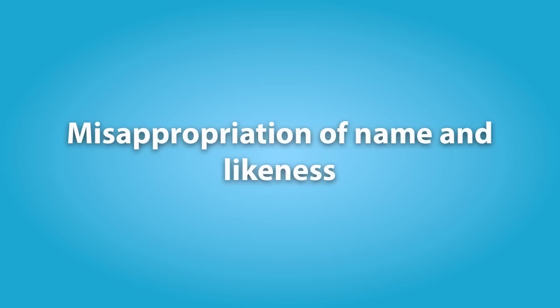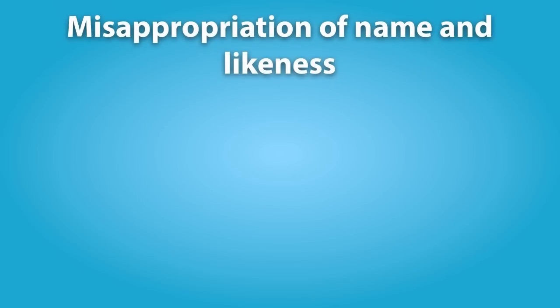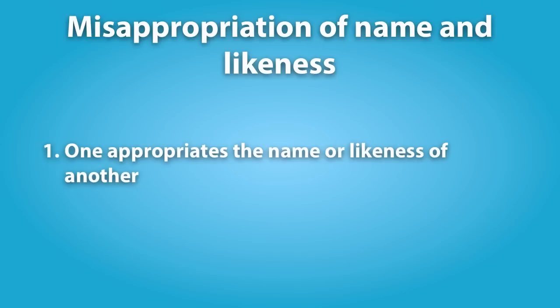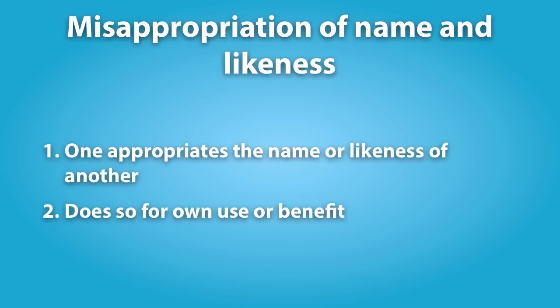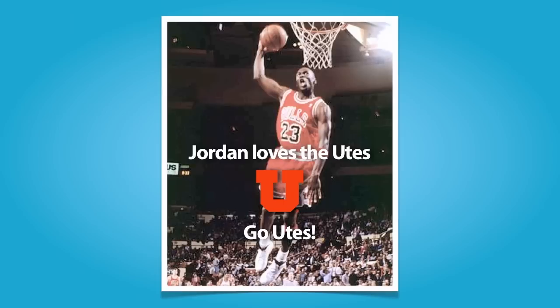The third common law tort recognized in Utah and most states is the tort of misappropriation of name or likeness. This tort is based on the concept that every person has a so-called right of publicity — the right to control the use of one's name, image, or distinguishing characteristics, such as a voice. Utah has enacted a statute that also makes this tort a crime. There are two elements: liability attaches when one appropriates the name, likeness, or characteristic of another and does so for one's own use or benefit, usually commercially. An example would be using Michael Jordan's name or image implying an endorsement of a product, or using someone's image in a commercial context without permission.